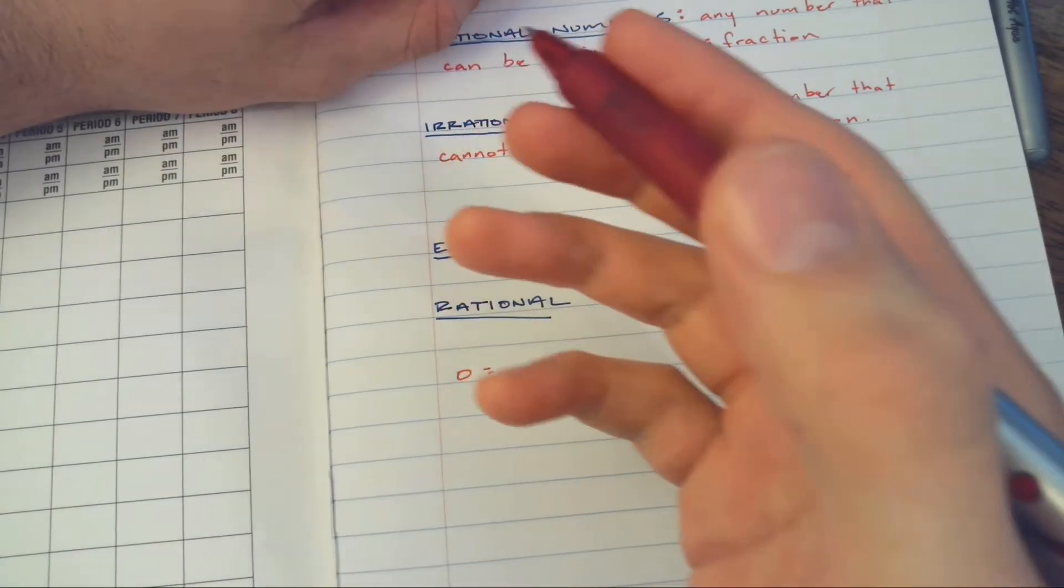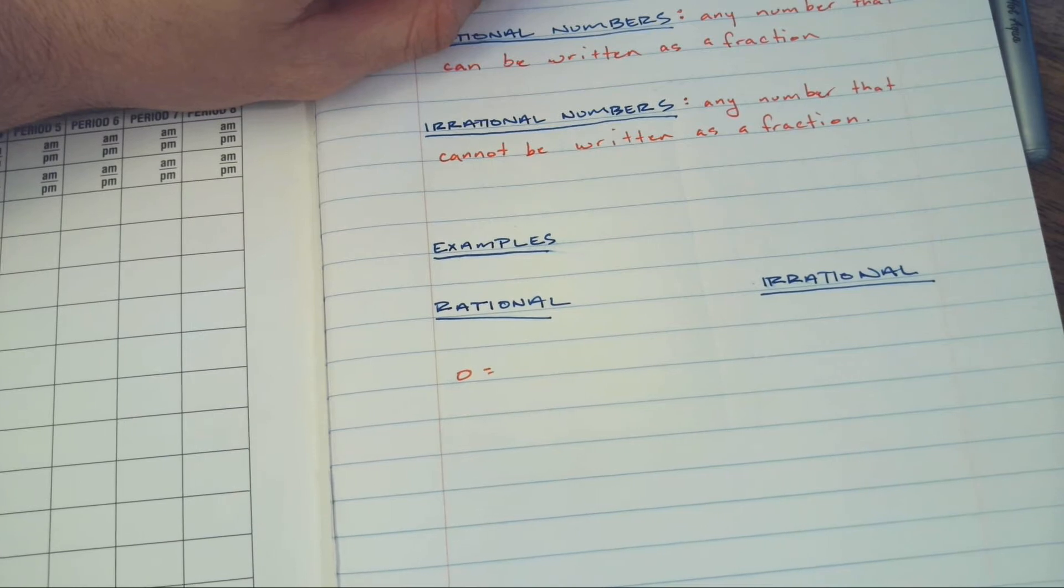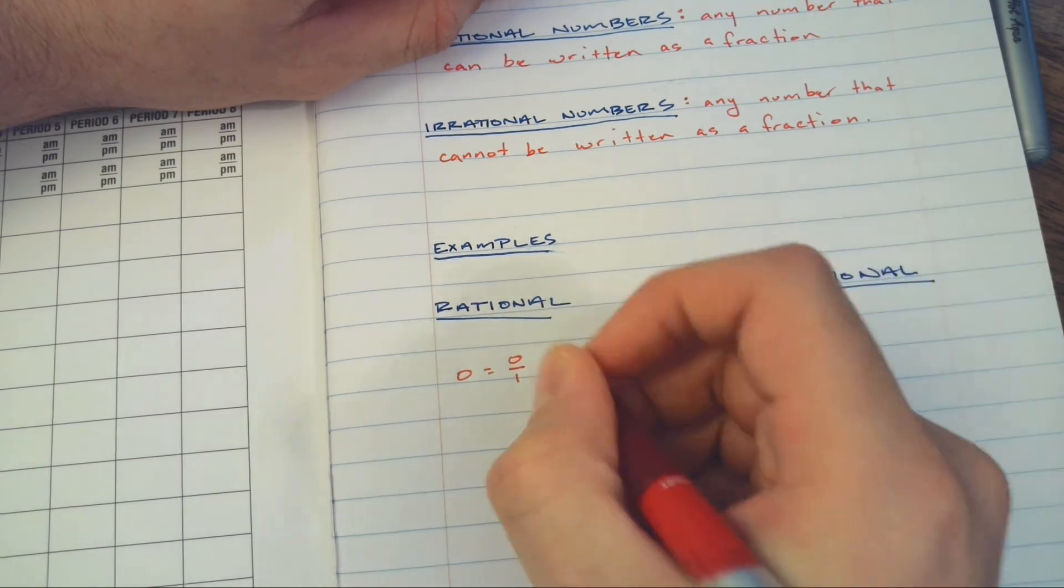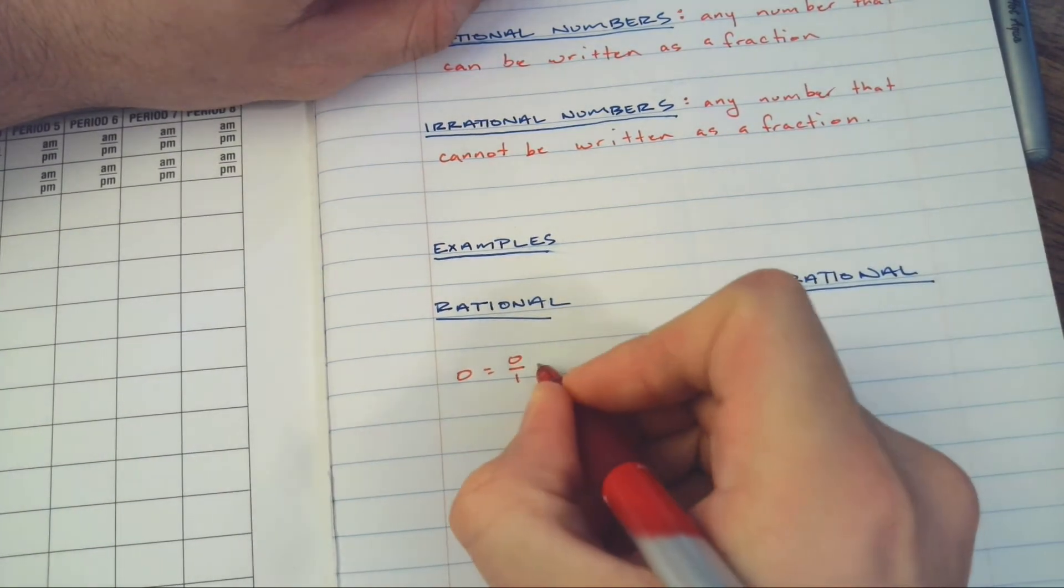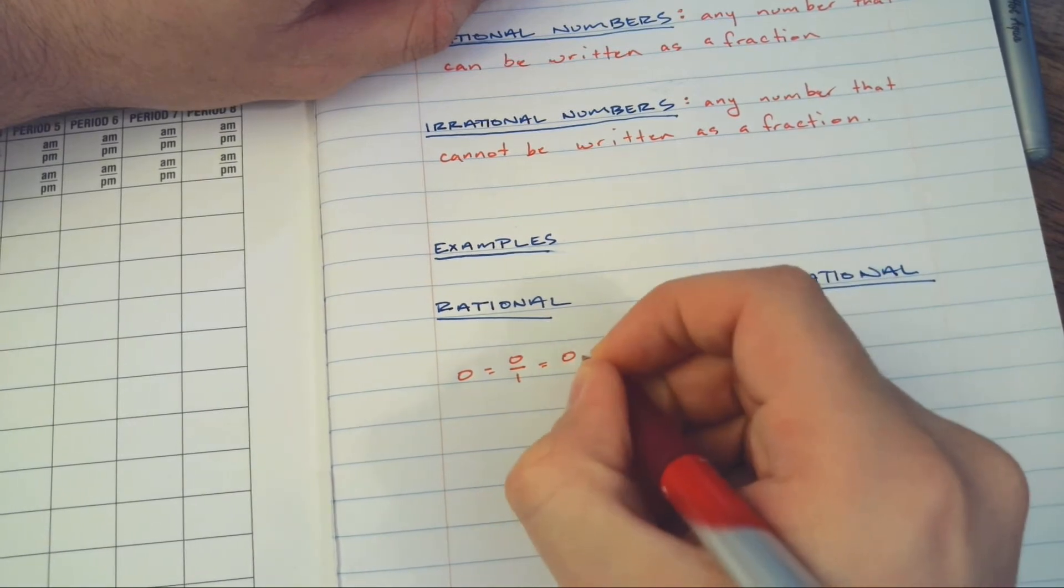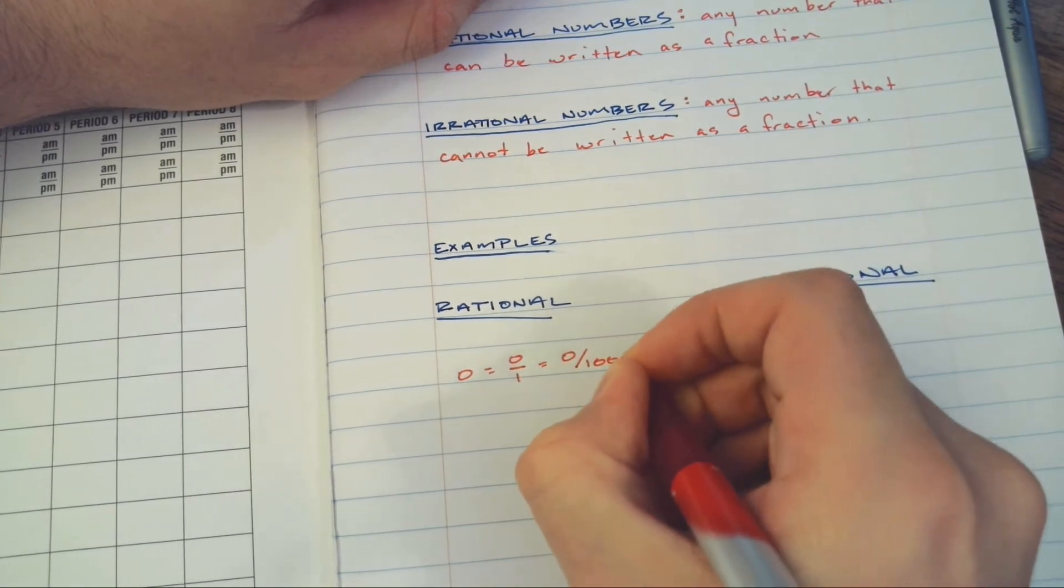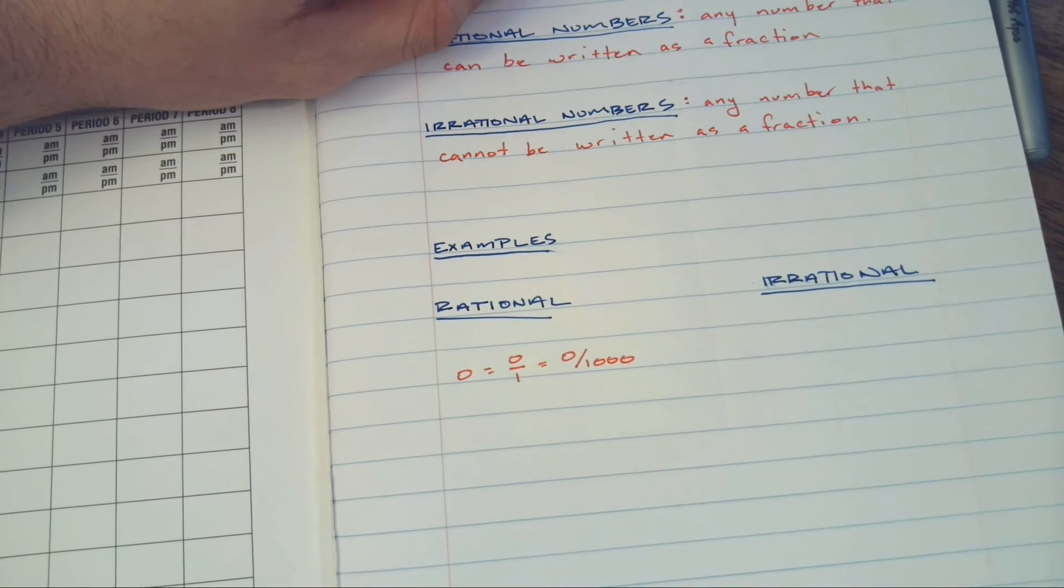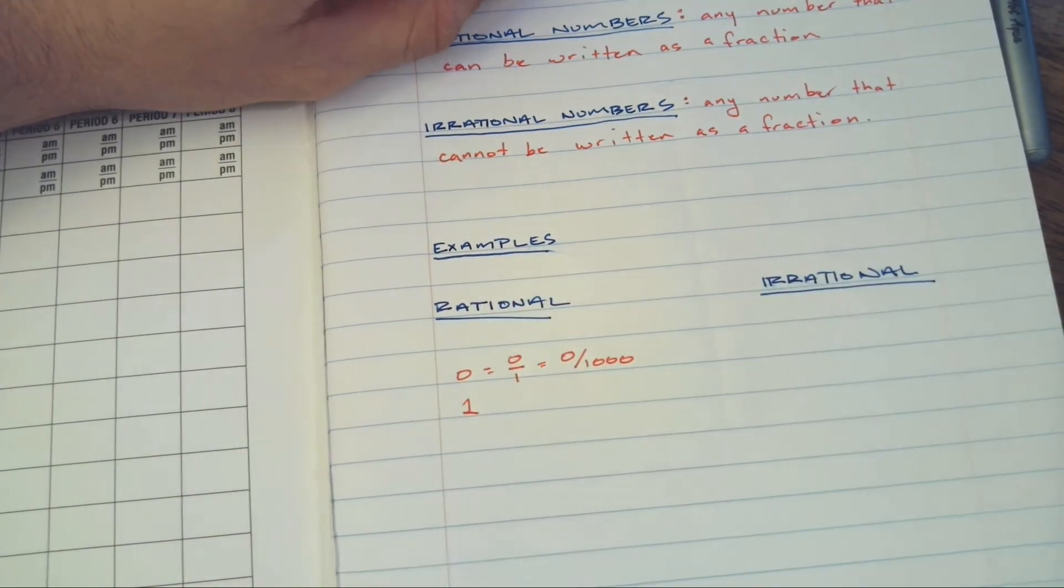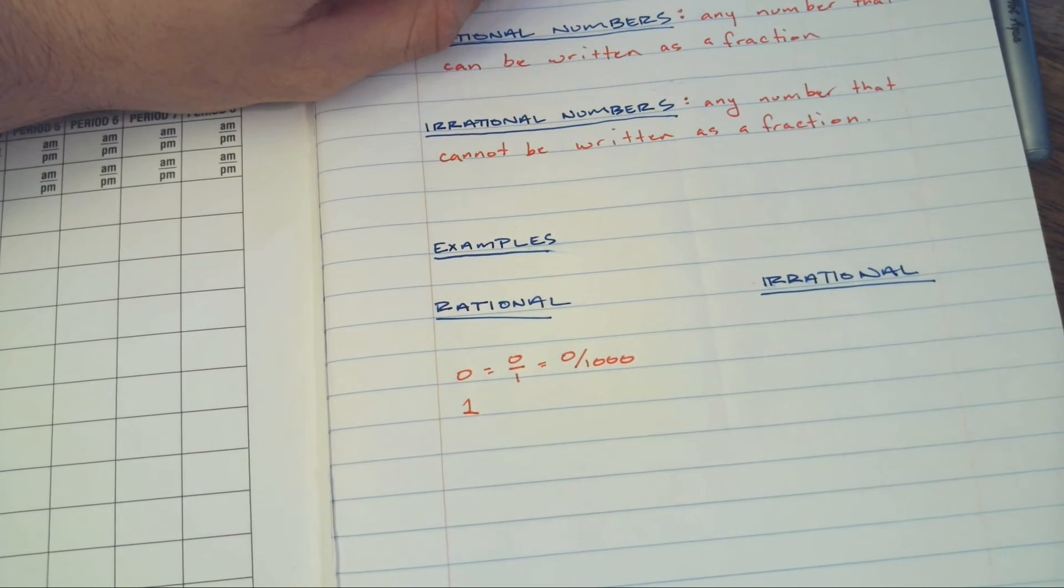How are we going to write zero as a fraction? Well, zero divided by anything is still zero. So that can be zero divided by one - that's going to be zero. Zero divided by anything is zero, so if it's zero divided by a thousand, yep, that's still zero. Similarly, let's check out another rational number - we got one.